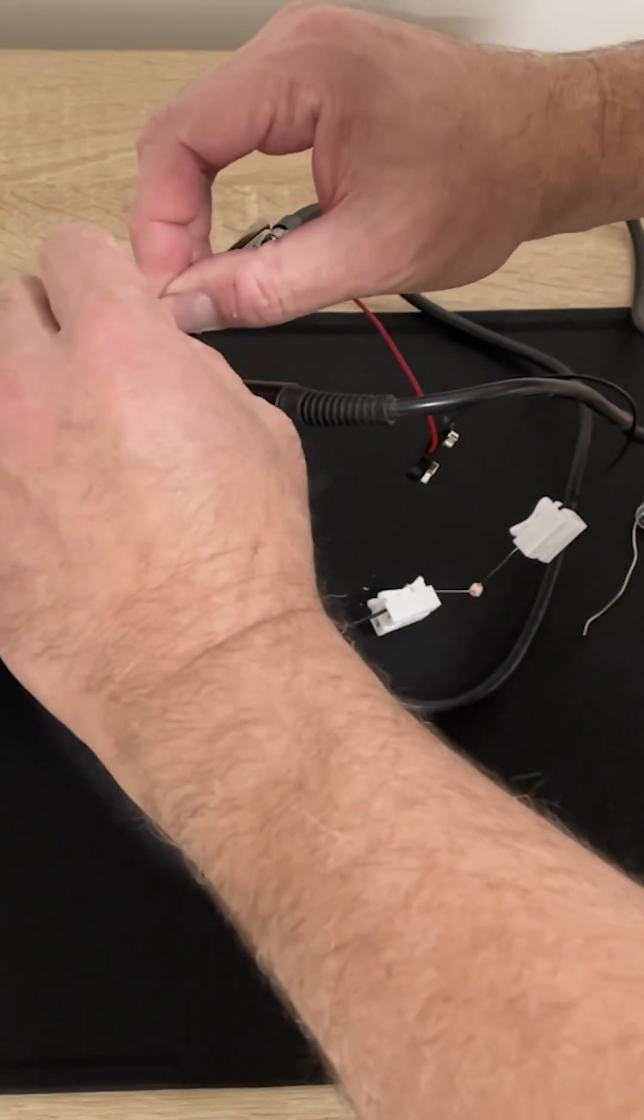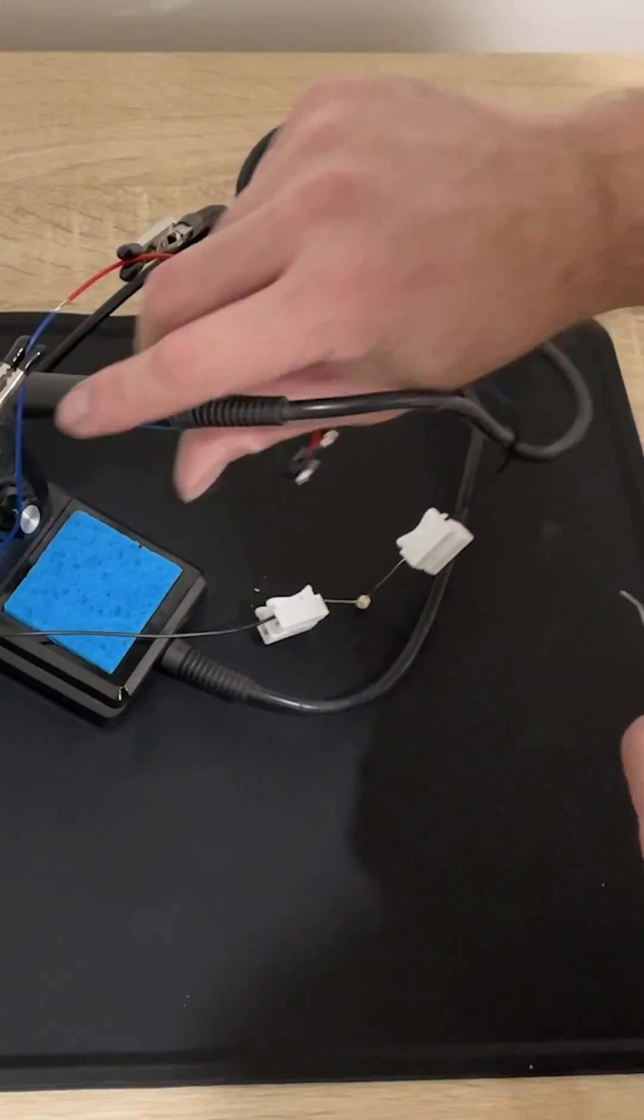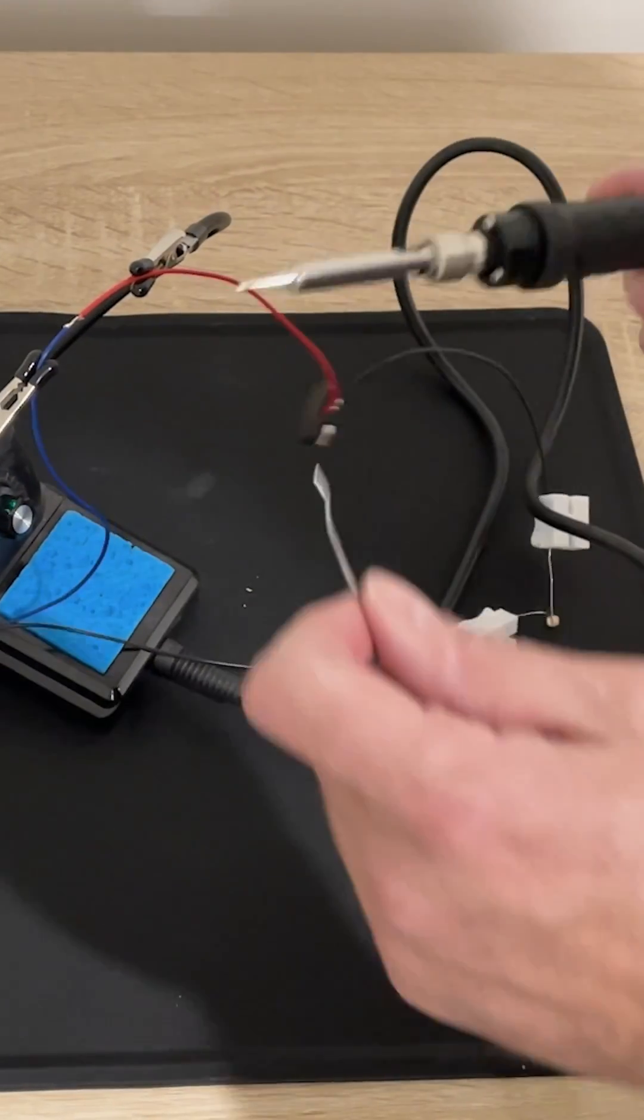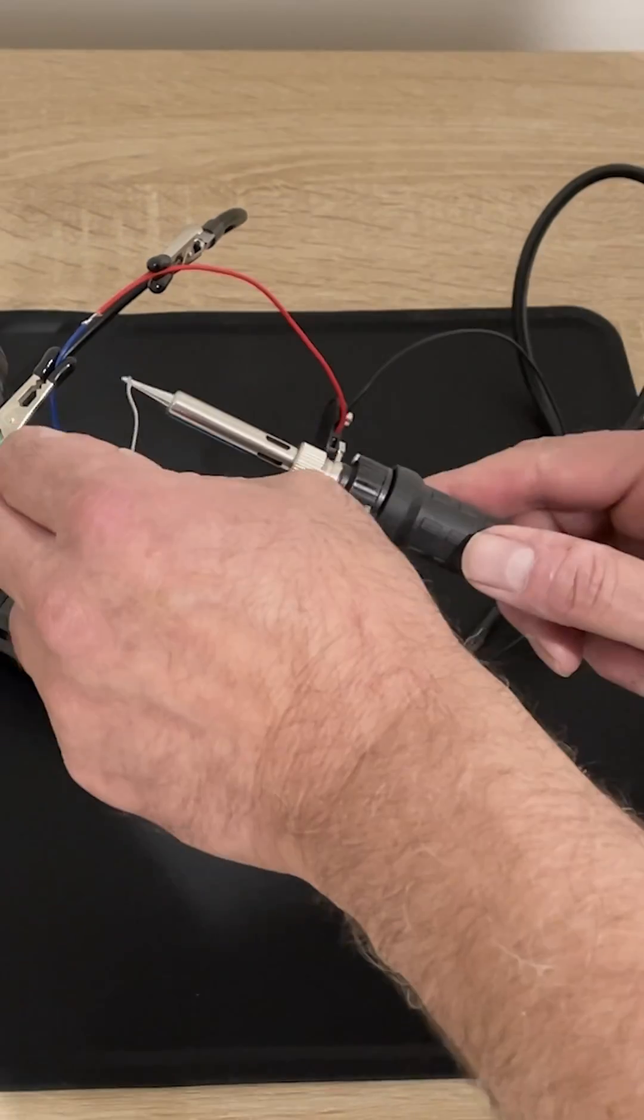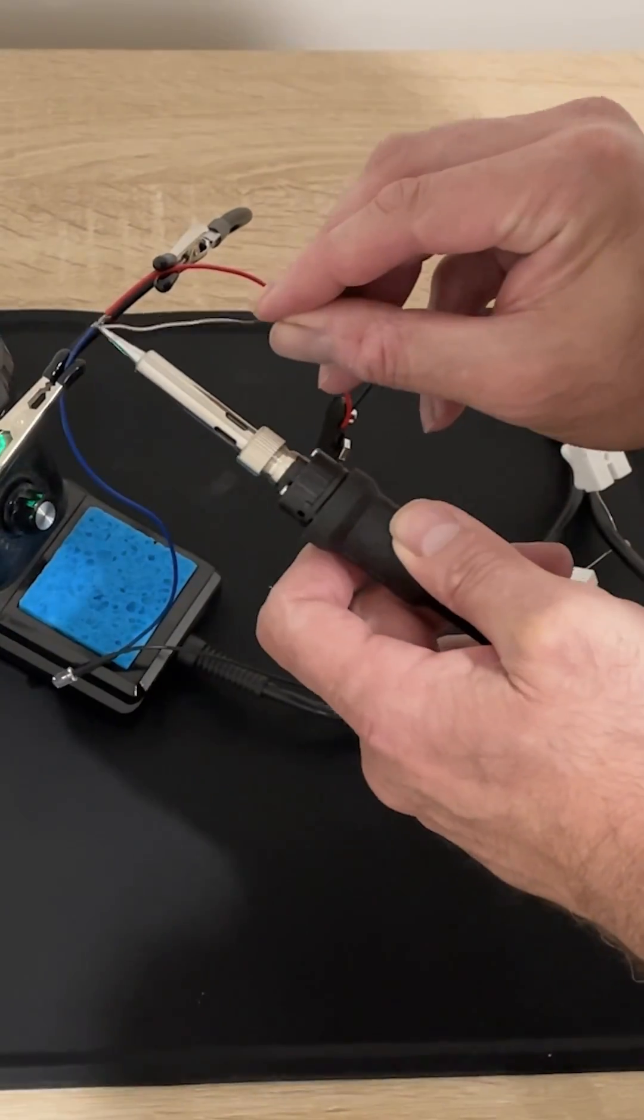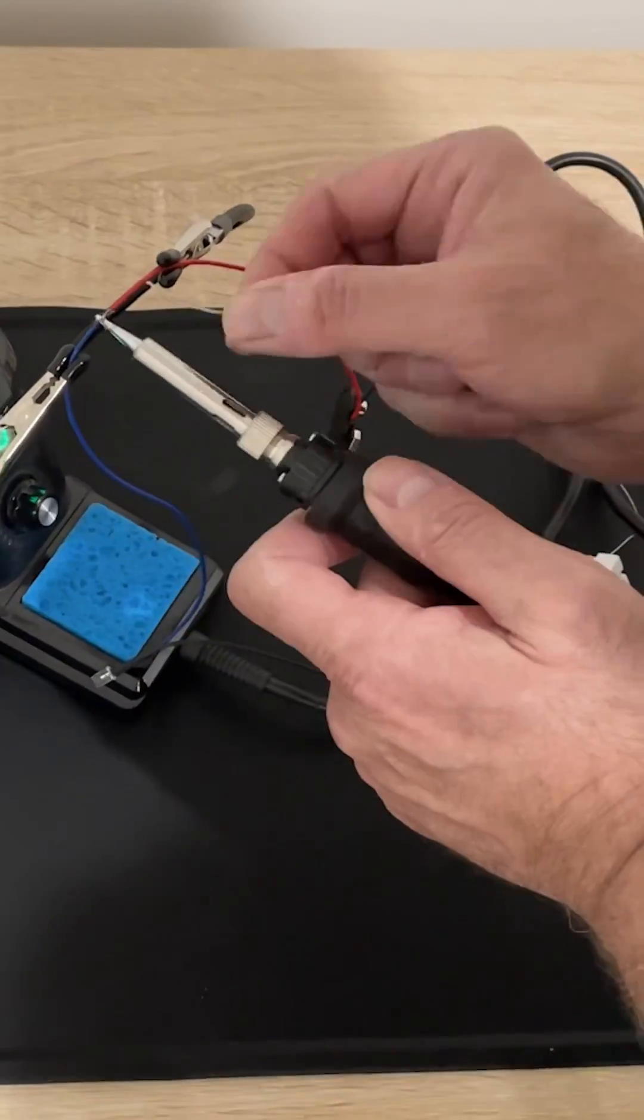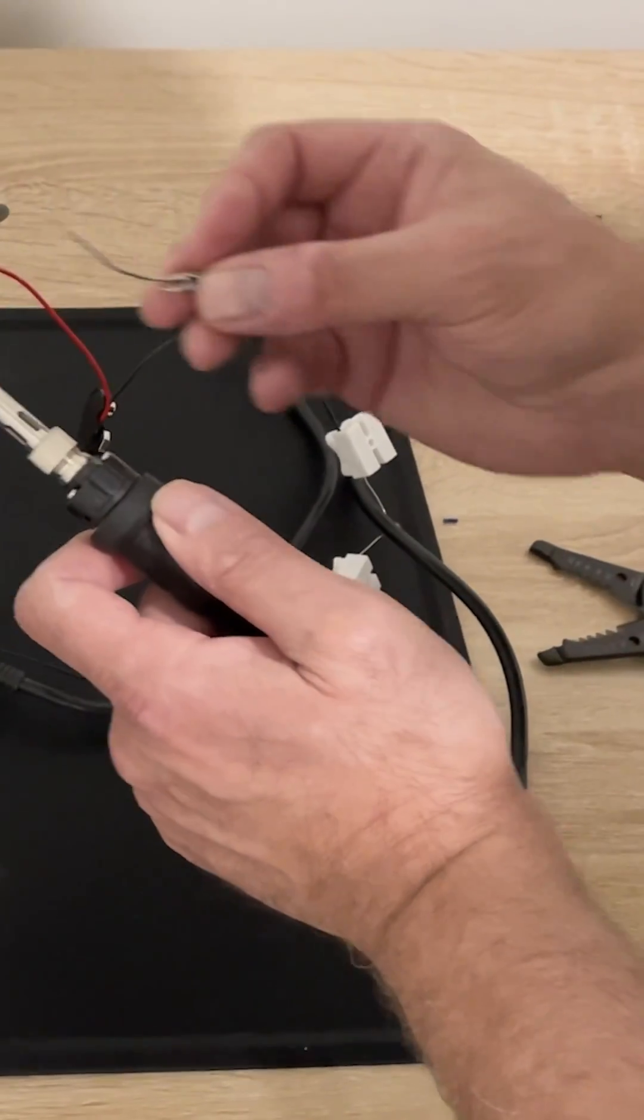So we're going to just twist these wires together first. We're going to take our soldering iron and put a drop of solder on it. If you're interested in learning how to solder, I have a video on my channel that shows the basics. I'll put a link in the description.